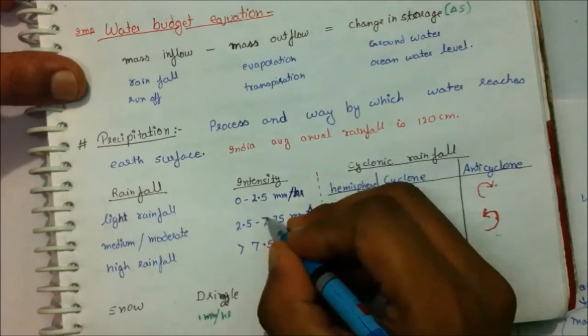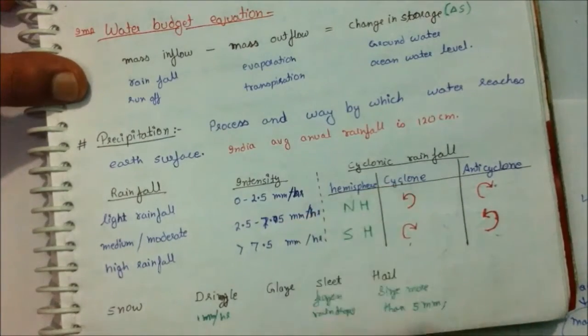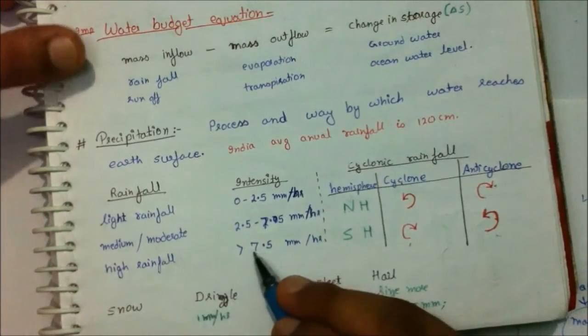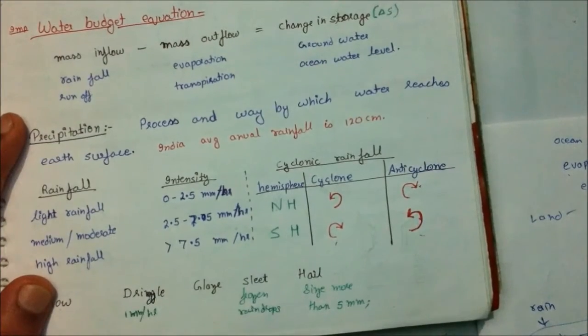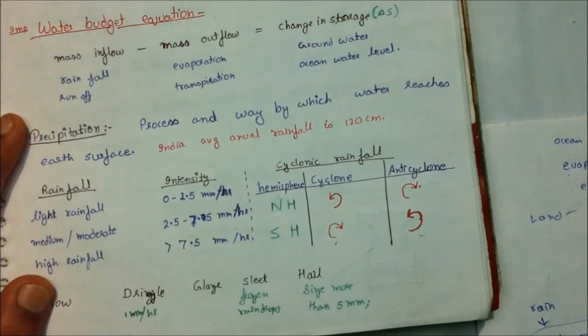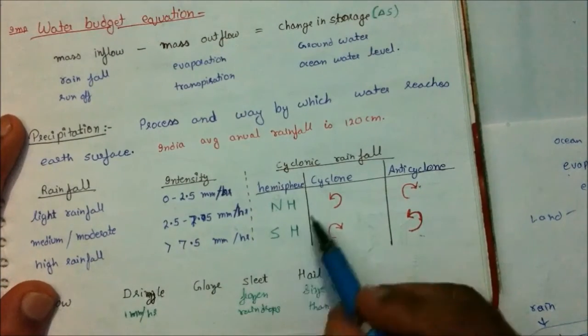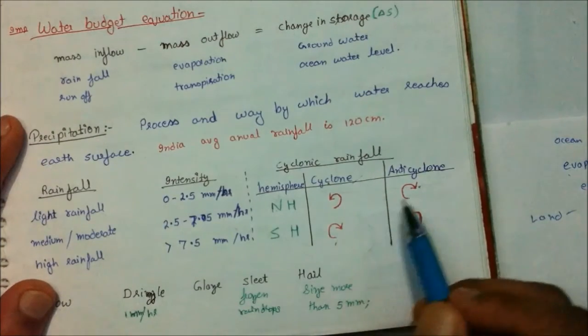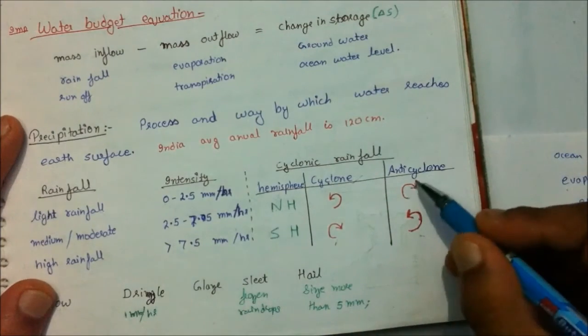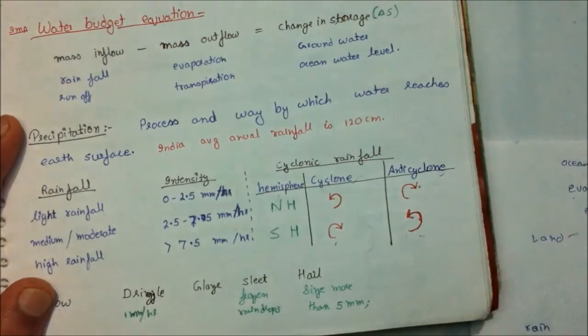High rainfall is greater than 7.5 mm per hour. Classifying rainfall in form of their direction of the winds, we have cyclonic rainfall and anti-cyclonic rainfall. Talking about northern hemisphere, if the wind direction is anticlockwise, we will be having cyclonic rainfall. And if rain direction is clockwise, we will be having anti-cyclonic rainfall.